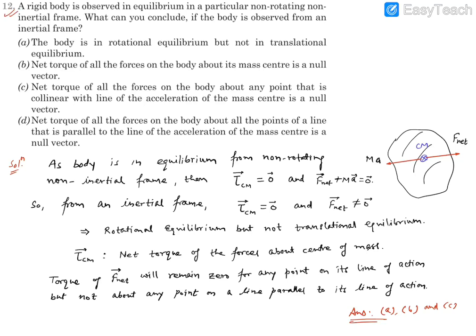Question 12. It says a rigid body is observed in equilibrium in a particular non-rotating, non-inertial frame. What can you conclude if the body is observed from an inertial frame? There are options.